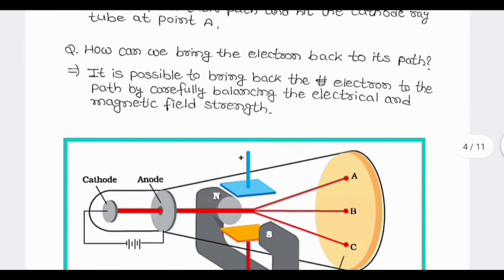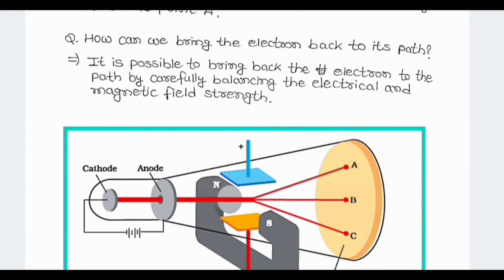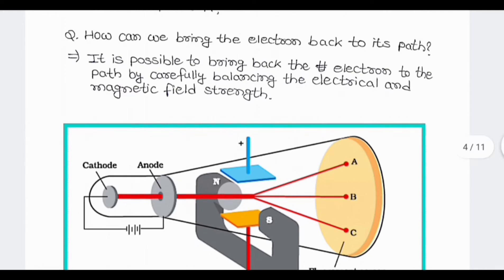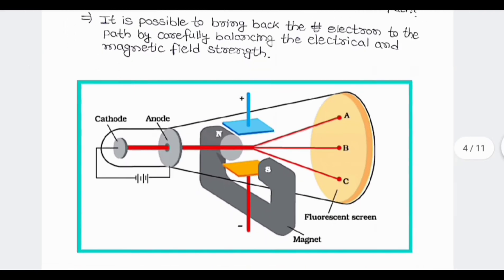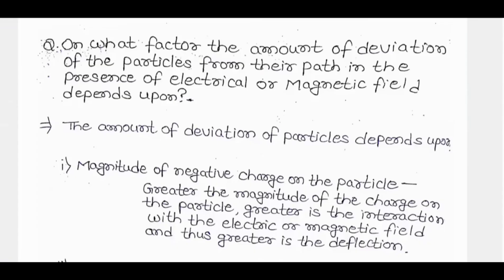How can we bring the electron back to its path? It is possible to bring back the electron to the path by carefully balancing the electrical and magnetic field strength.